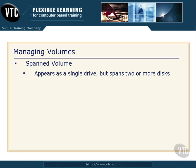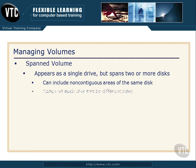A spanned volume is where we can span two or more disks, but that volume still shows up to us as a single drive. We can also include non-contiguous areas of the same disk — non-contiguous means the two areas are not sitting side by side; they can be separated. The space on each disk can also be different sizes, so you can grab little sections of free space across two or more disks and put all of that into your volume, and it will show up as a single drive letter.